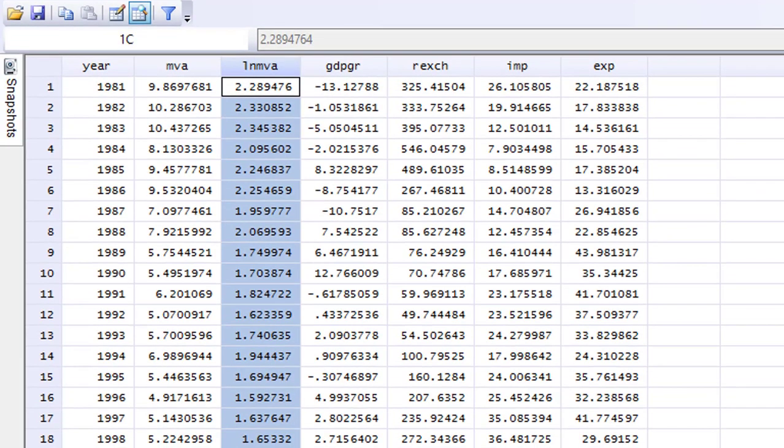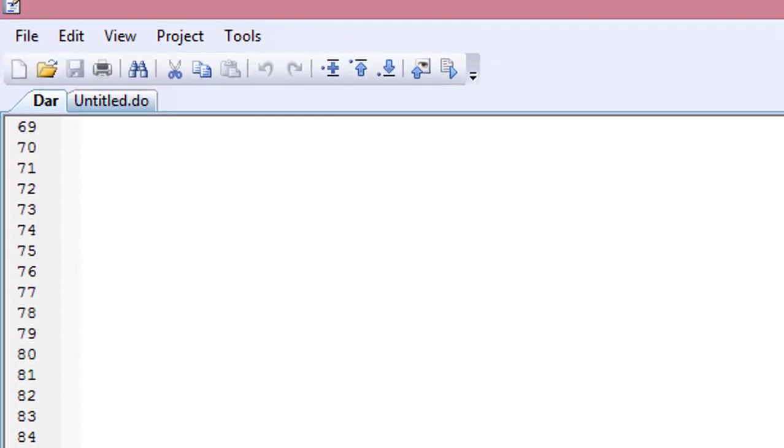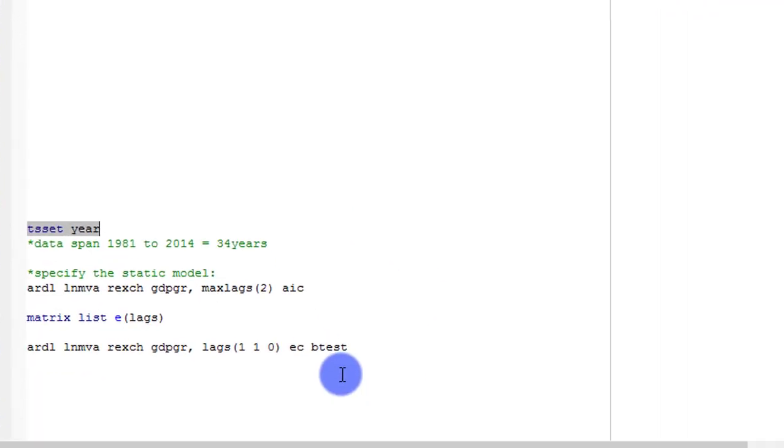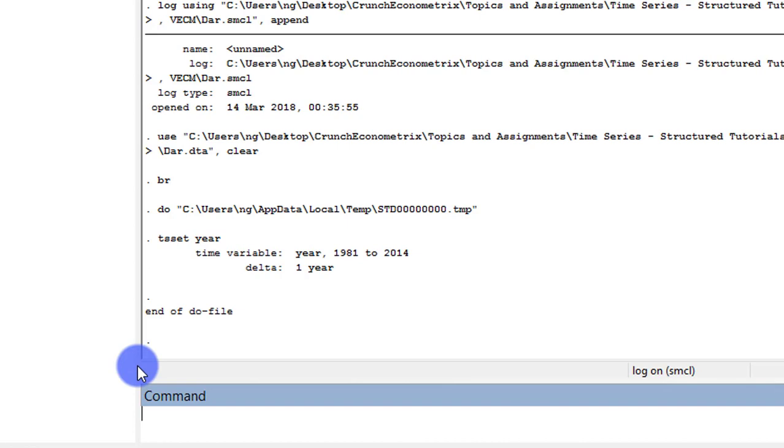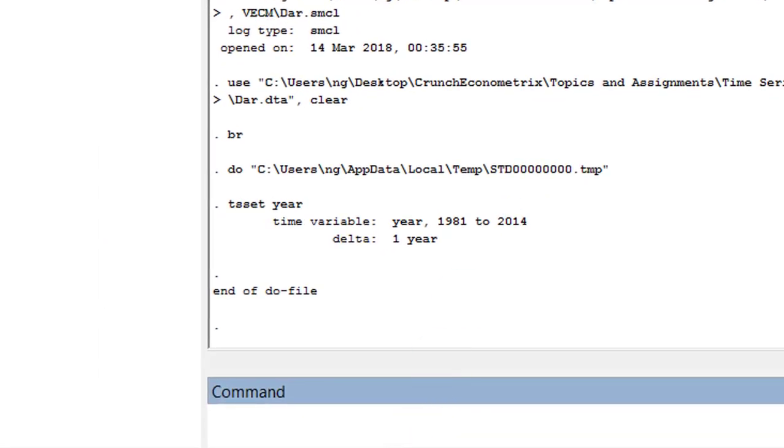Opening my do file, I need to prepare Stata to run time series analysis by issuing this command, tsset year. I click on run, and Stata returns with this. I have a time variable from 1981 to 2014. So I am ready to run time series analysis.